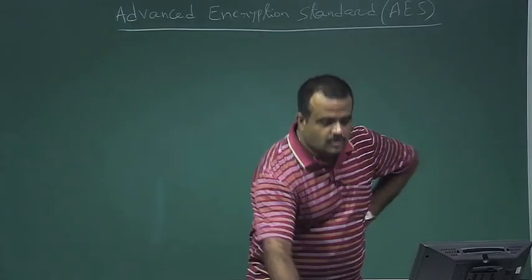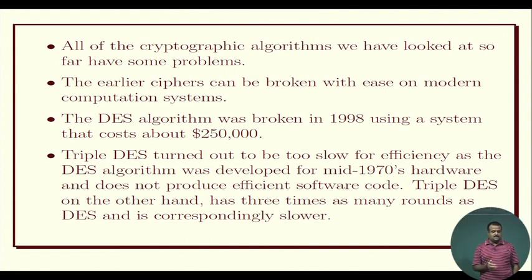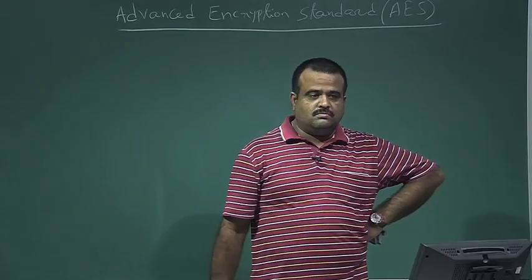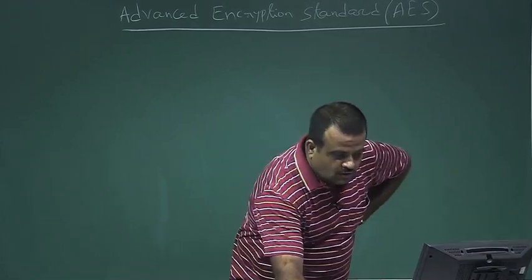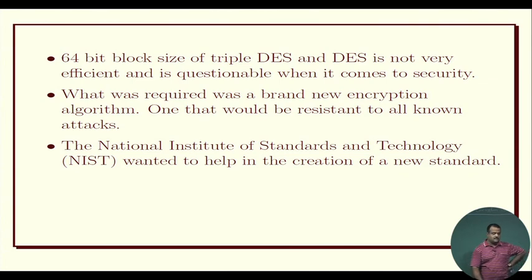DES is not secure, so we need an alternate standard. People tried Triple DES, which is basically made from DES itself — two encryptions and one decryption. Each DES is 16 rounds, so the total rounds in Triple DES is 48 rounds, which is huge and makes the algorithm very slow. DES also has a problem with its 64-bit block size.